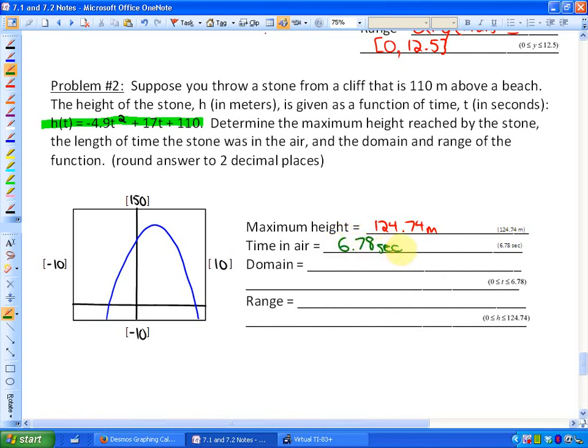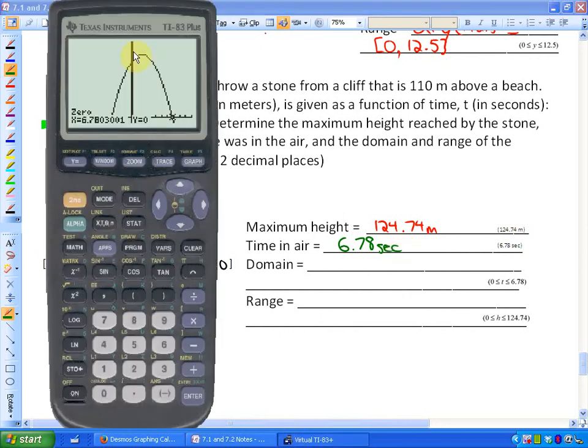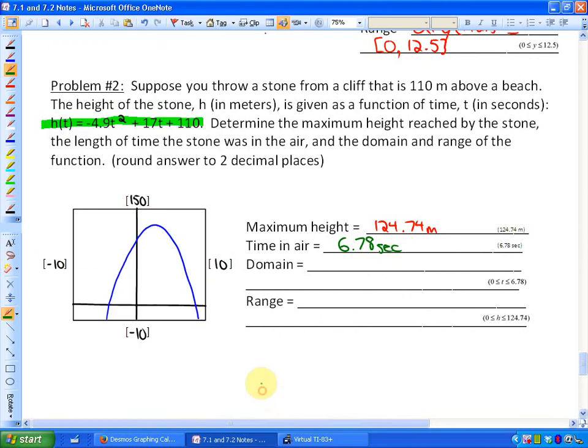And finally, the domain. Well, this particular rock was thrown at a time of zero and hits the ground at 6.78. So the domain here would be between a time of zero and 6.78 seconds. That's when it started and ended its path. Or if you wanted set notation, it would be between zero and 6.78, represented this way.